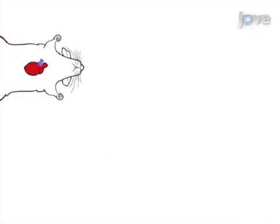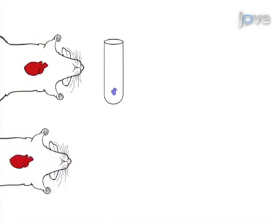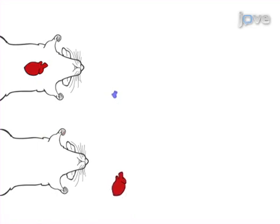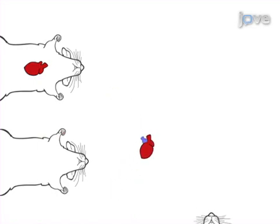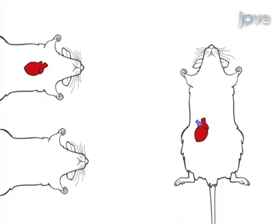This is accomplished by first harvesting the pulmonary heart valve from donor mouse heart tissue. In the second step, the entire heart is harvested from a second donor. The donor pulmonary heart valve is then implanted onto the donor heart, and the heart with the new heart valve is heterotopically transplanted into a recipient mouse.